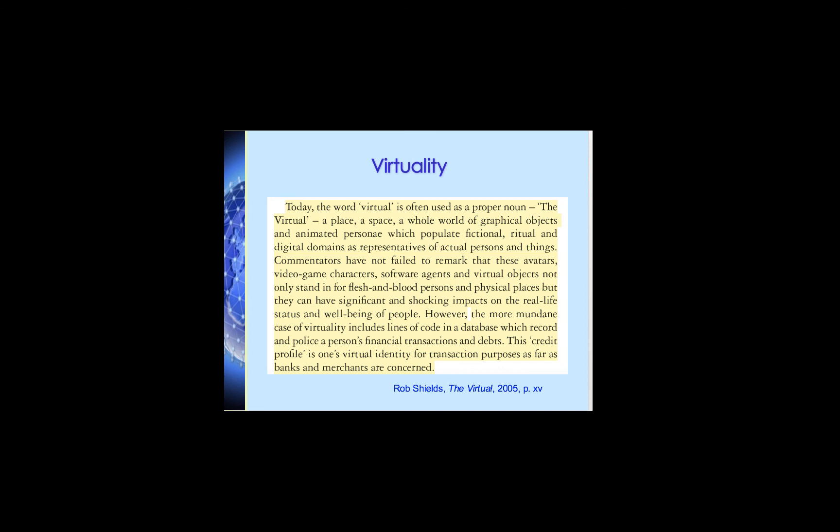Let's revisit the book The Virtual by Rob Shields. He gives us a very capacious definition of the word virtuality that encompasses the history given in this lecture. He says: today, the word 'virtual' is often used as a proper noun — 'the virtual' — a place, a space, a whole world of graphical objects and animated personae populating fictional, ritual, and digital domains as representations of actual persons and things. Commentators have not failed to remark that these avatars, video game characters, software agents, and virtual objects not only stand in for flesh-and-blood persons in physical places, but have significant and shocking impacts on the real-life status and well-being of people. However, the more mundane case of virtuality includes lines of code in a database that record and police a person's financial transactions and debts — this credit profile is one's virtual identity for transaction purposes as far as banks and merchants are concerned.